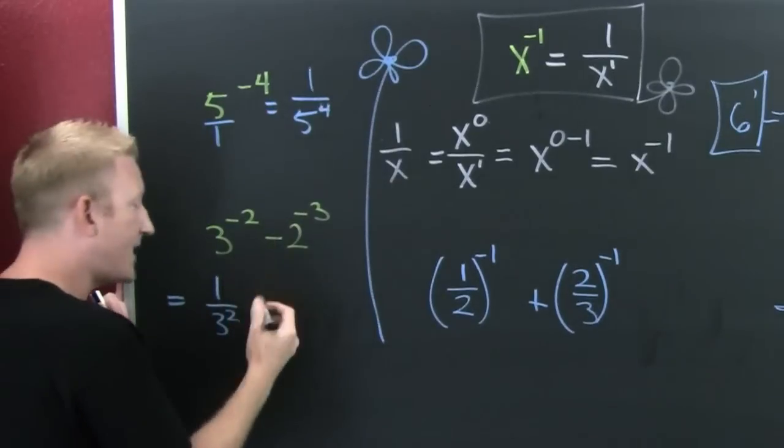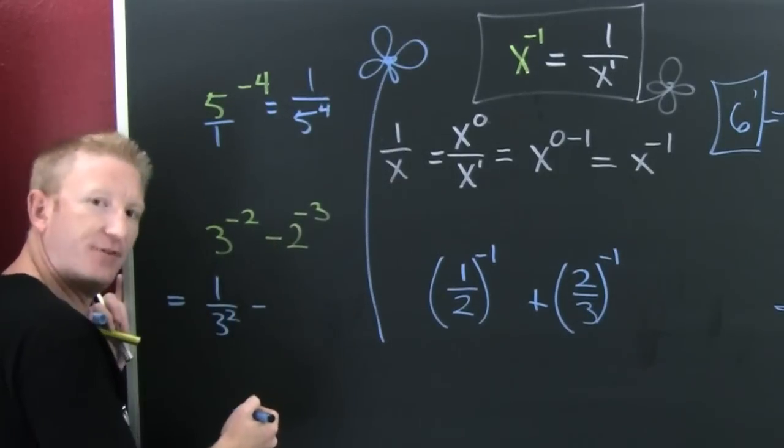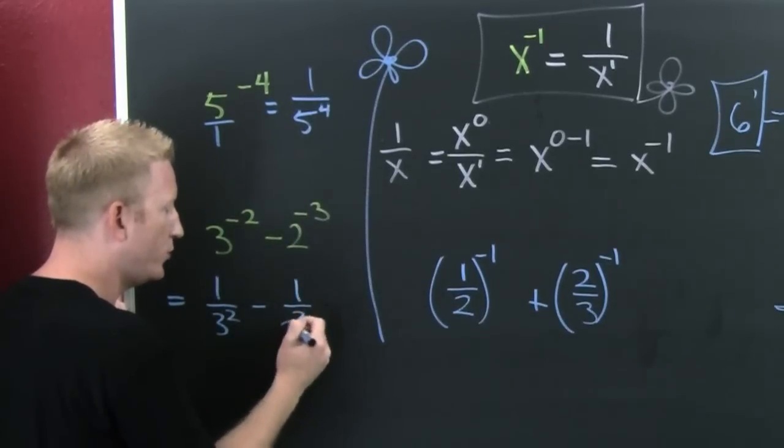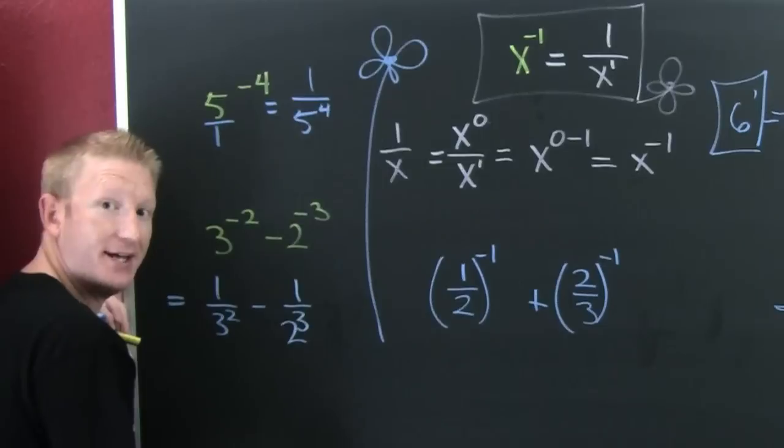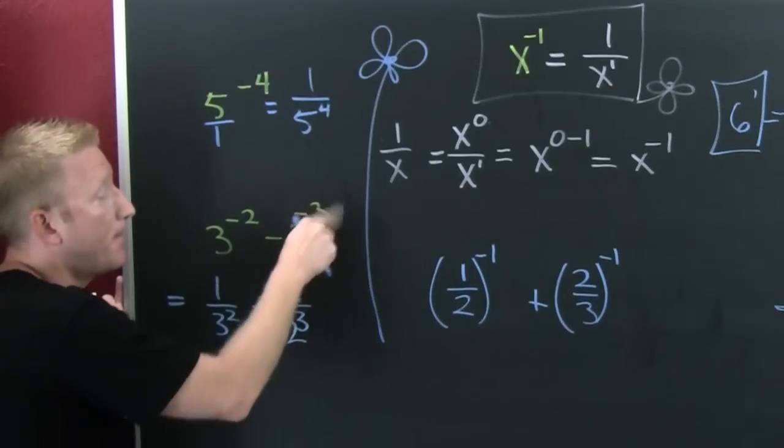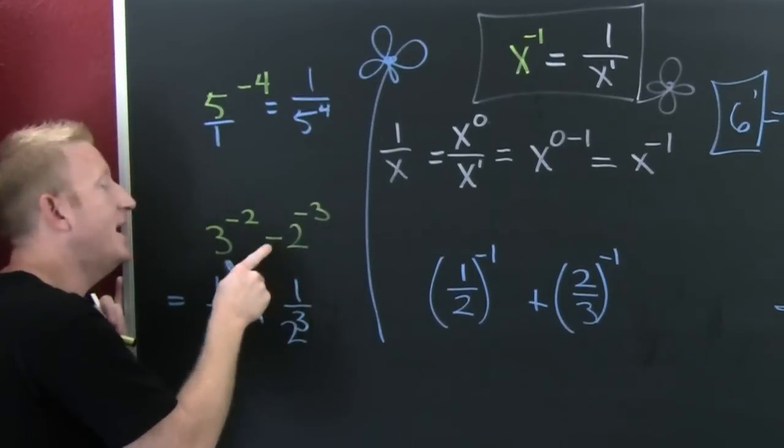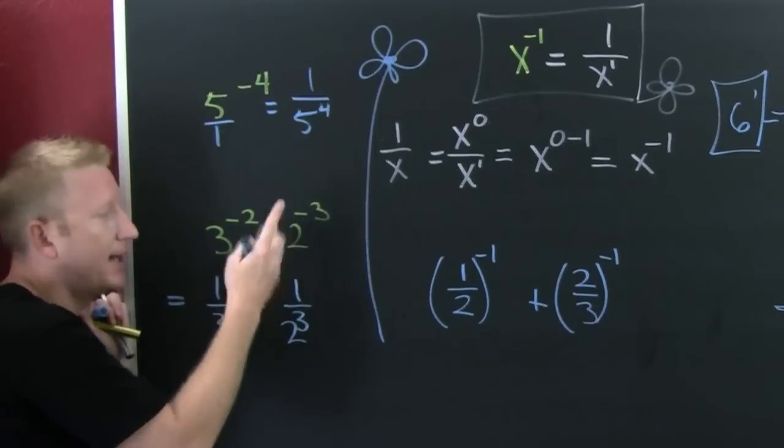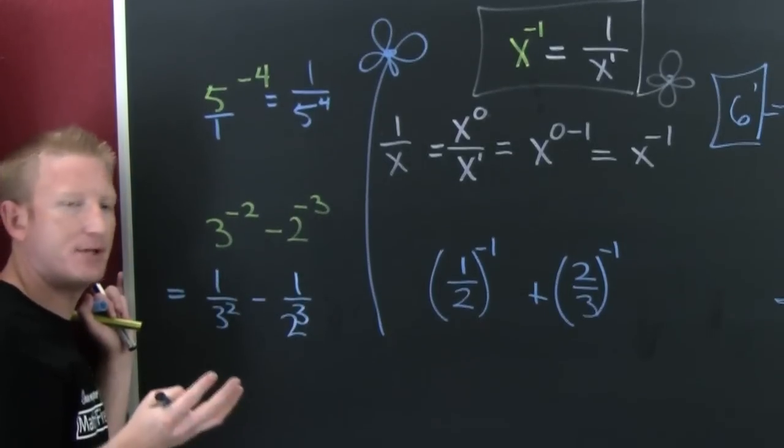And similarly, that minus stays out front. So this is 1 over 2 to the third. That's 8. And that minus, since the minus 3 is only on the 2, it doesn't change anything out in front. I suppose I could have brought up another example about that.